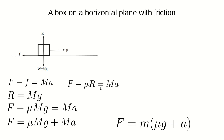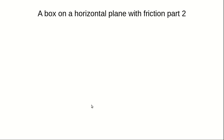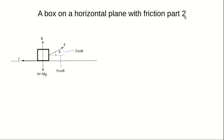Now let's see the next possible scenario: a box on a horizontal plane with friction, Part 2. This time, the force on the block is applied at an angle θ to the horizontal. To resolve the forces along the x-axis, we must resolve this force into its horizontal and vertical components.